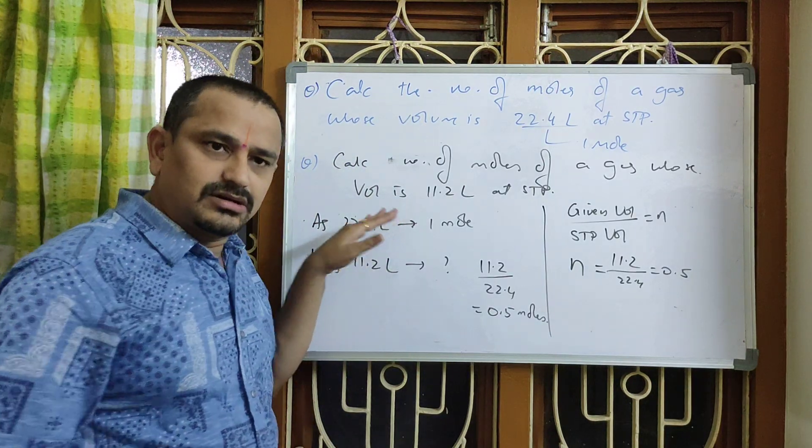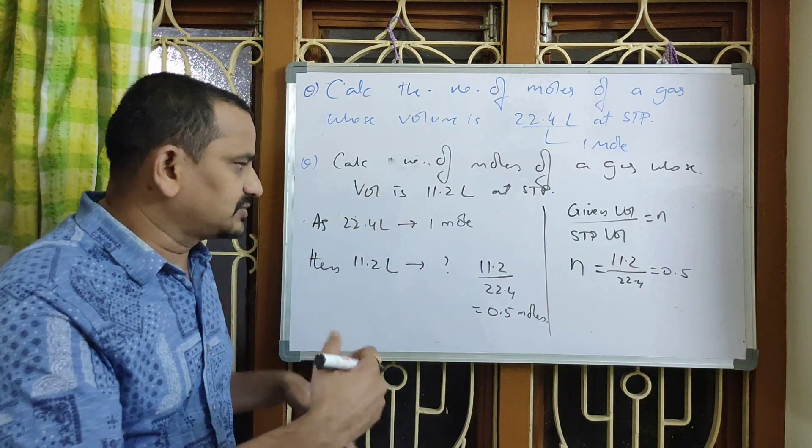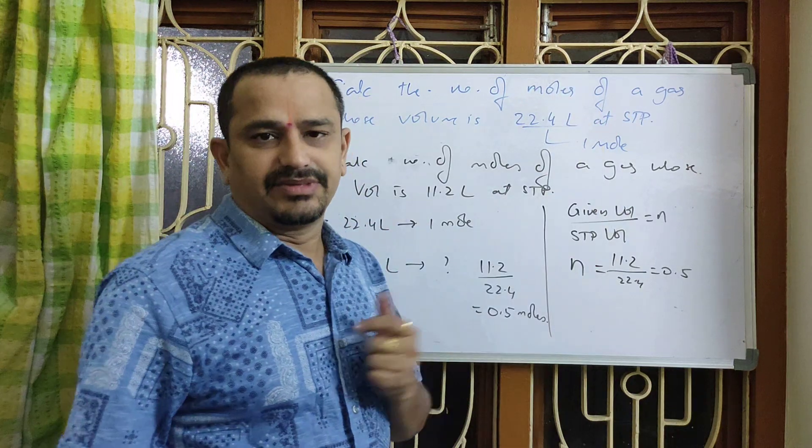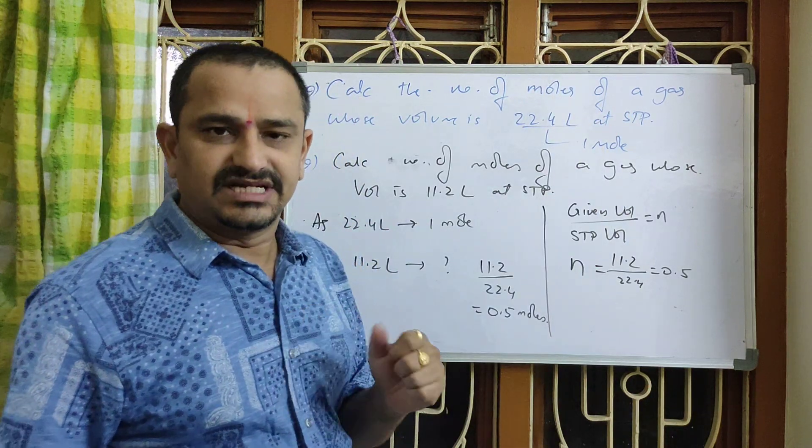A shortcut to remember: given volume divided by STP volume gives us the number of moles. So number of moles = given volume / STP volume = 11.2 / 22.4 = 0.5. This is a conceptual approach and a direct method to remember.